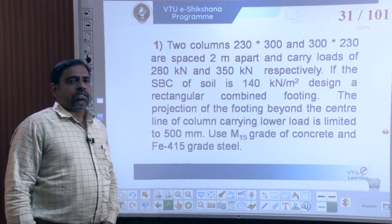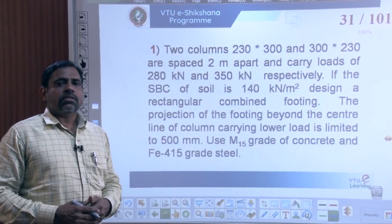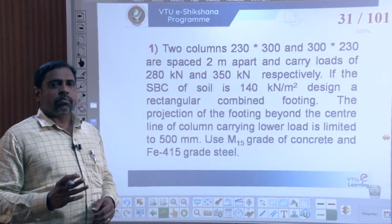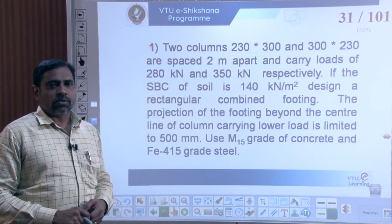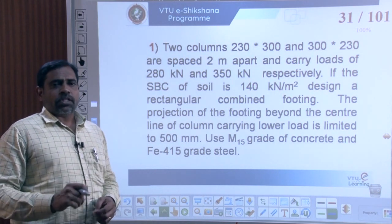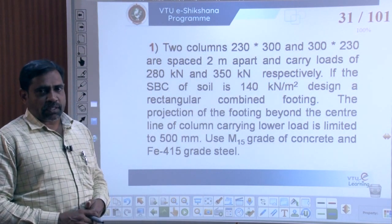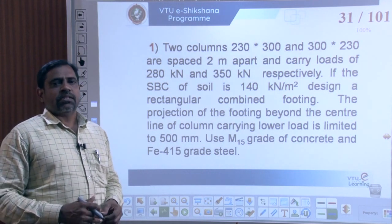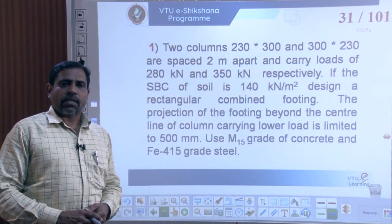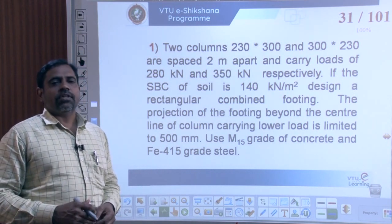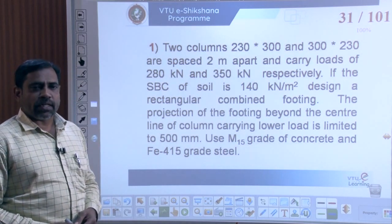The problem statement is as follows: we have two columns of size 230×300 mm and 300×230 mm, spaced 2 meters apart, carrying loads of 280 kN and 350 kN respectively. The SBC of the soil is 140 kN/m². We need to design a rectangular combined footing, with the projection beyond the centerline of the column carrying the lower load limited to 500 mm. Use M15 grade concrete and Fe415 grade steel.